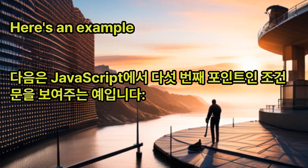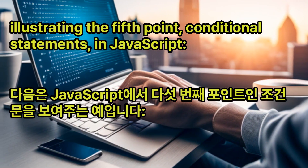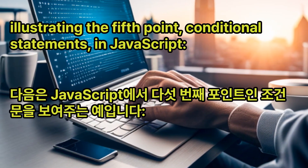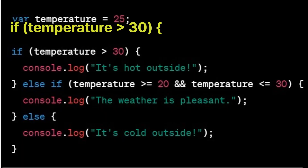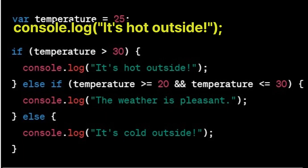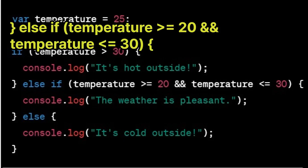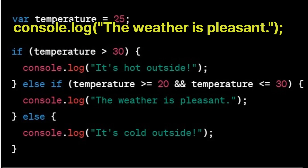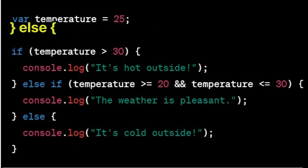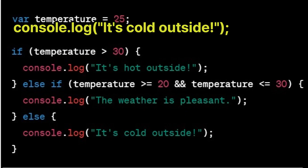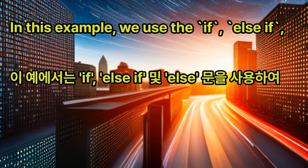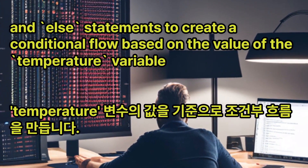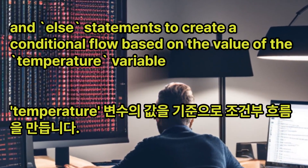Here's an example illustrating the fifth point, conditional statements, in JavaScript: var temperature = 25. if (temperature > 30) { console.log('It\'s hot outside'); } else if (temperature >= 20 && temperature <= 30) { console.log('The weather is pleasant'); } else { console.log('It\'s cold outside'); }. In this example, we use the if, else if, and else statements to create a conditional flow based on the value of the temperature variable.